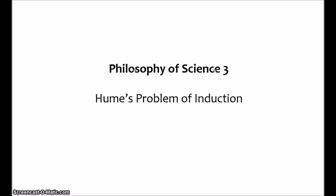I'll probably come back to this later in the series. However, there are a couple of very general problems plaguing any theory of scientific confirmation. These are problems with the use of induction in general. Today, we're going to look at David Hume's arguments that induction is not rationally justified. If Hume is correct, we shouldn't rationally trust any ampliative inference — any inference where the conclusion tells us more than is contained in the premises. This would seem to completely undermine any theory of scientific confirmation.